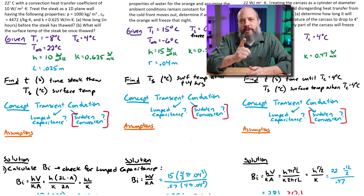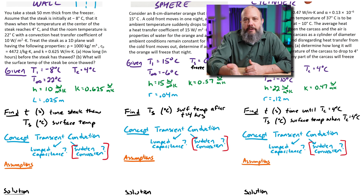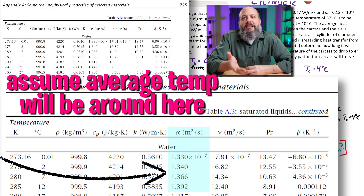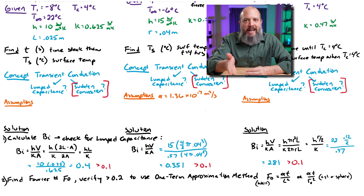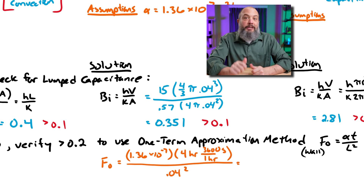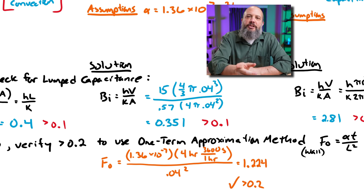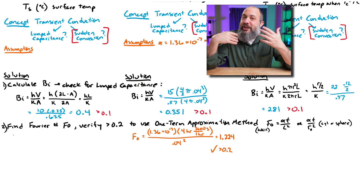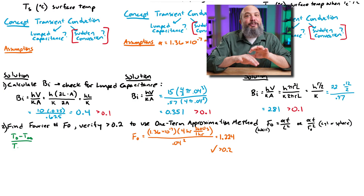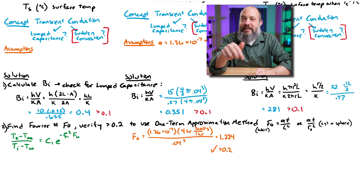We don't actually have time for the plane wall and cylinder problems, so we can't calculate the Fourier number yet for those — but we can calculate it for the sphere. I look up alpha for water: 1.36 × 10⁻⁷, plug in four hours converted to seconds, and divide by the radius squared. That gives a Fourier number of 1.22 — greater than 0.2, which verifies we can use the one-term approximation for the orange. For the wall and cylinder, we'll assume the method, solve for the Fourier number, and then verify it is greater than 0.2.